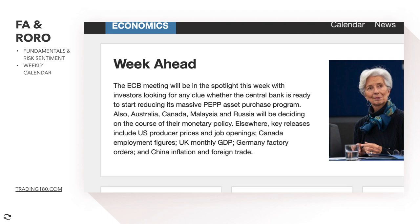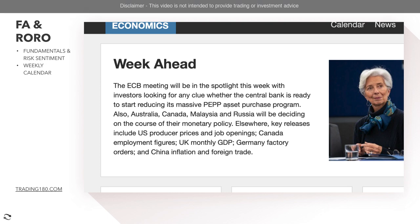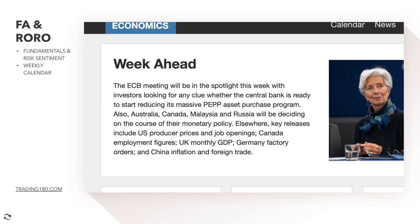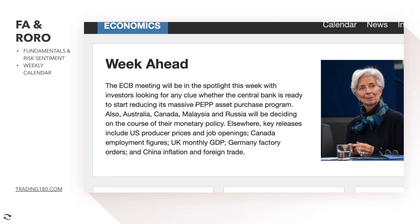By reducing the PEPP asset purchase program, it signals that the eurozone can support itself without financial aid — potentially a good sign of economic growth, which should cause the currency to appreciate. This week also sees Australia and Canada deciding on the course of their monetary policy. Key releases include US producer prices and job openings, Canada employment figures, UK monthly GDP, Germany factory orders, and China inflation and foreign trade — lots of potential market-moving news.